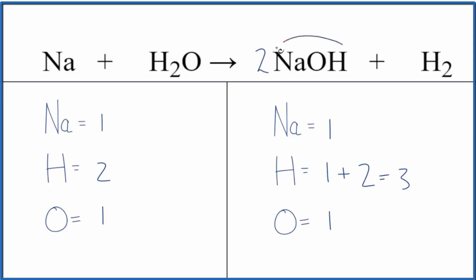This two, it applies to everything here. So let's update these numbers. So you have one times two, two sodium atoms, one times two, two of the oxygen atoms, and then hydrogen we have one times two plus these two out here. So now we have four hydrogens.